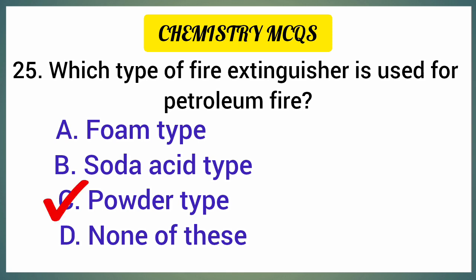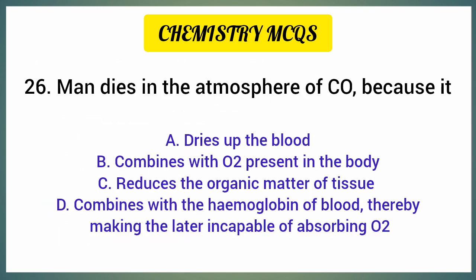Man dies in the atmosphere of carbon monoxide because it — correct option is option D: it combines with the hemoglobin of blood, thereby making the latter incapable of absorbing oxygen.